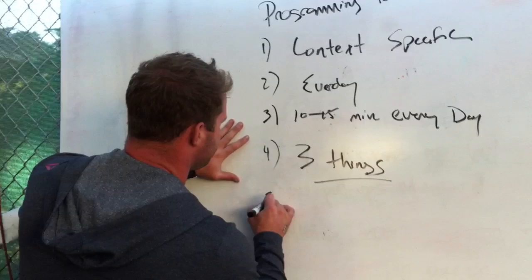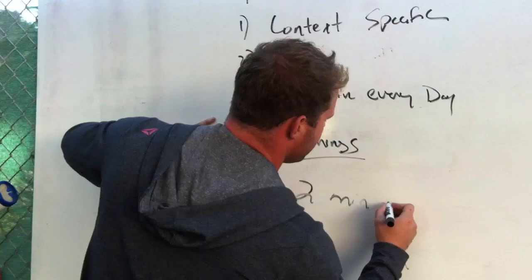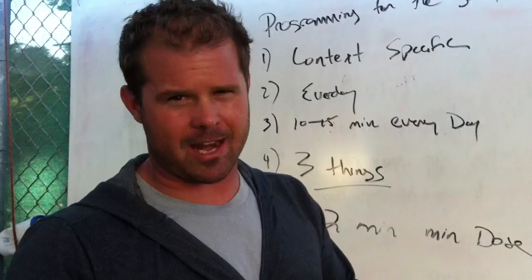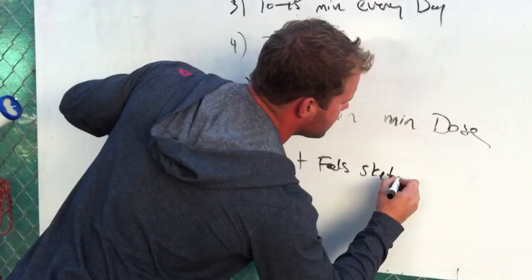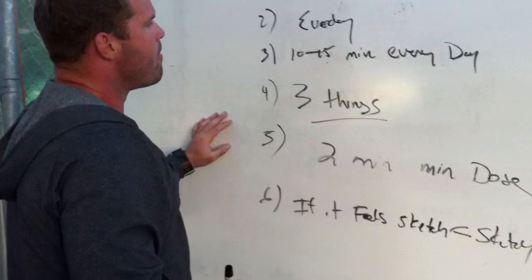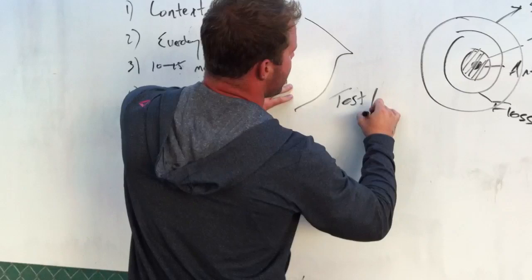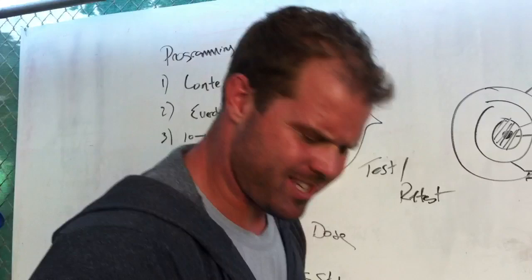Five, it's got to be two minutes minimum dose. Make sure you treat until you make change, otherwise you're not going to get in there long enough. Six, if it feels sketchy, it's sketchy. Reposition. Try something else. Most important — this is the big driving home message — it's got to be test and retest. Make sure you're standing people up in between and after, and they can actually see change and experience change in the range of motion.